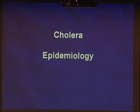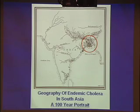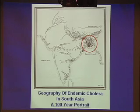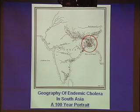Turning to the epidemiology: this is a 100-year portrait of the geography of endemic cholera in South Asia. This region — India, the Bay of Bengal, Bangladesh — is the epidemic center of cholera in the world, from which most epidemics spread globally to become pandemics. We are in either the beginning of the eighth or end of the seventh cholera pandemic right now.